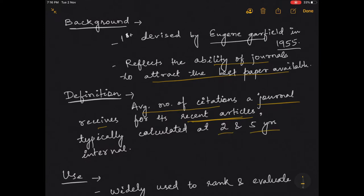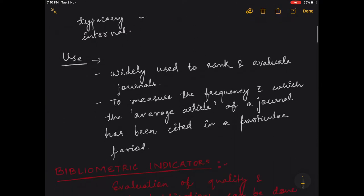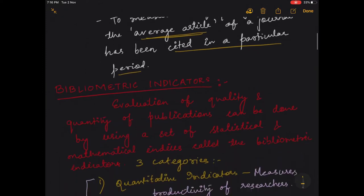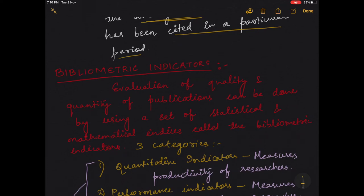Now what is the use of impact factor of a journal? Impact factor of the journal is widely used to rank and evaluate journals and to measure the frequency with which the average article of the journal has been cited in a particular period.